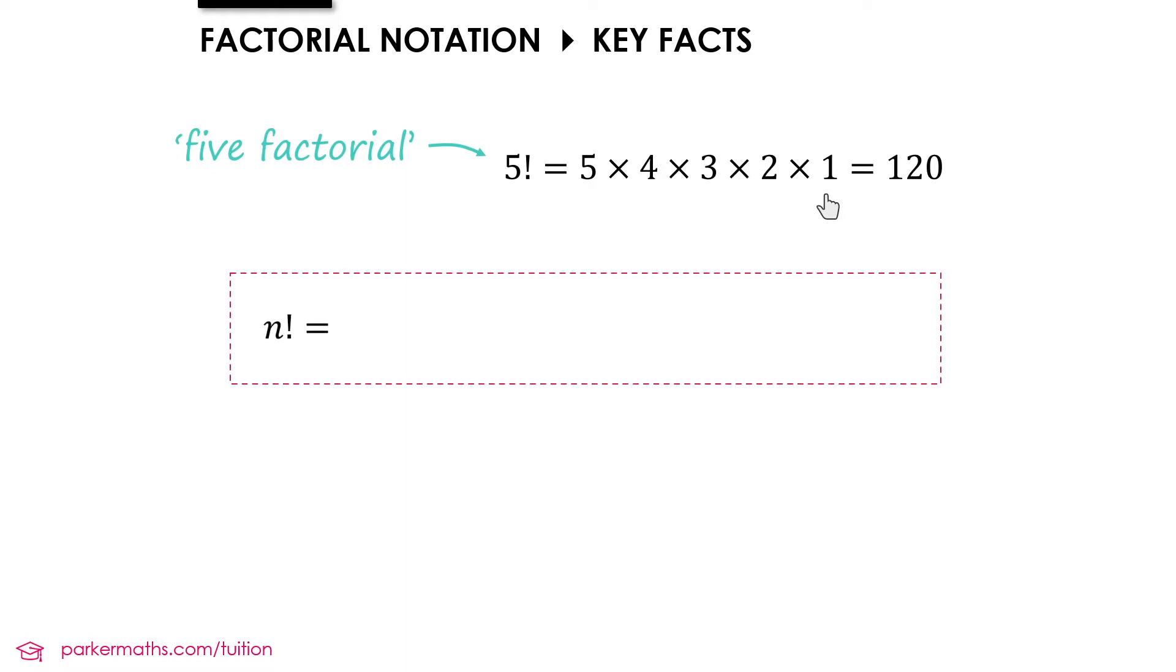And so more generally we could write down a rule for n factorial. That would be n, and then if we subtract 1 we get n minus 1. So we multiply by that, and then that's multiplied by n minus 2, and we would keep going decreasing by 1 each time until we got 3, 2 and 1. And so this is called n factorial.